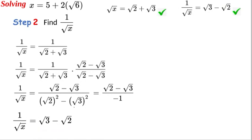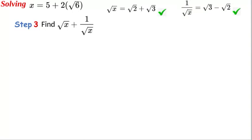Okay, so we have two parts now. We have √x + 1/√x. Let's go on to step three now, and we need to add them together.